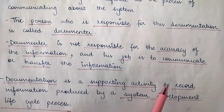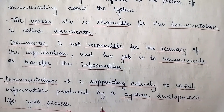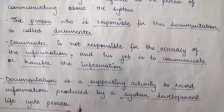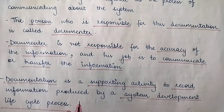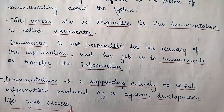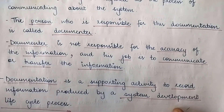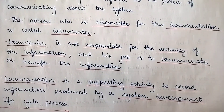Documentation is a supporting activity to record information produced by a system development life cycle process. Whatever information is produced during the entire stages of the system development life cycle process, all that information needs to be recorded for future reference. Documentation is the process of recording or storing that information about the various stages of the system development life cycle in a proper format, helping with future references about the information system.